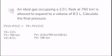So here's an example problem. An ideal gas occupying a 2.0 liter flask at 760 torr is allowed to expand to a volume of 8.3 liters. Calculate the final pressure. So here we're going to use the formula P1V1 equals P2V2. And since we're trying to solve for final pressure, we have to solve for P2, and we could do that by dividing both sides by V2.